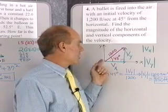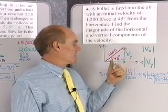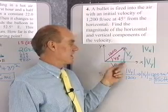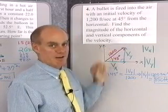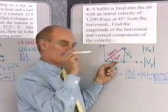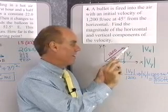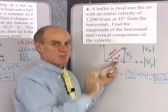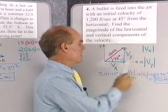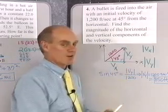A velocity of 1,200 feet per second at 45 degrees up from the horizontal is equivalent to a horizontal velocity of 850 feet per second plus a vertical velocity of 850 feet per second. So the bullet is rising at 850 feet per second and going forward at 850 feet per second, and those two together give it a velocity of 1,200 feet per second at 45 degrees up from the horizontal. I don't need to solve for V_x separately because it's a 45-45-90 triangle, so they're equal.